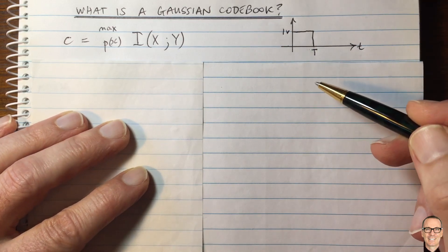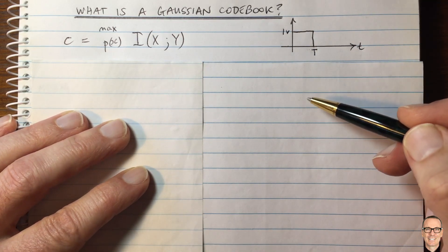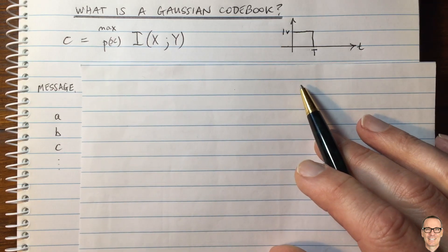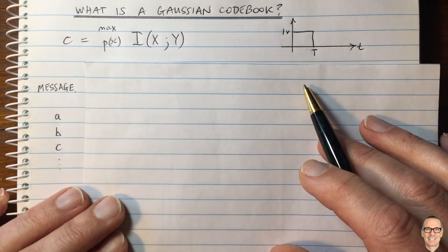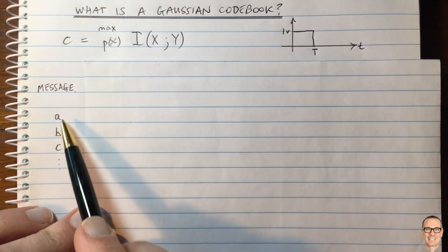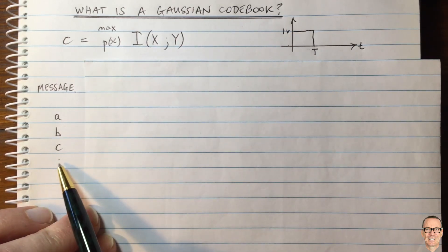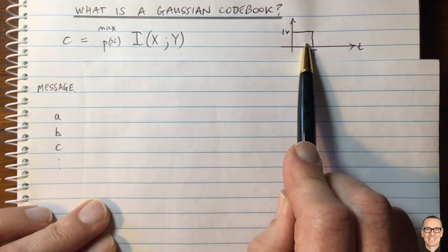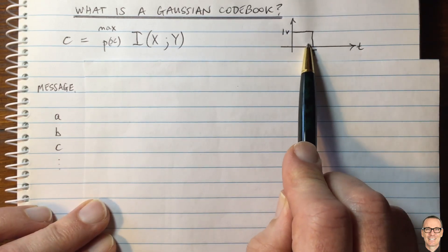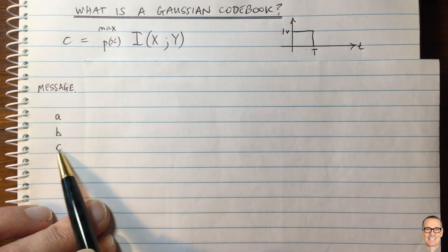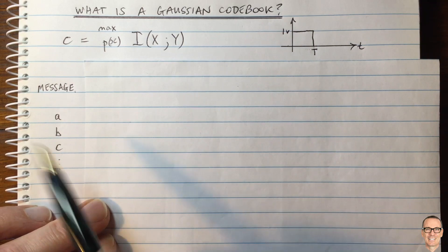But of course we want to send more complicated messages, like words. Words are made up of letters. If we've got the letters of the alphabet — A, B, C, and so on — there are 26 of these, and we can only send them as ones or zeros. So we need a way of mapping the A's, B's, and C's to ones and zeros.